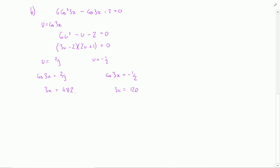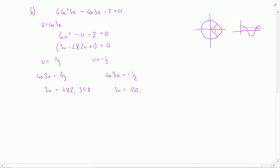With trigonometry we always get multiple solutions. Using a unit circle or a cosine curve: for 48.2°, the other solution is 360° − 48.2° = 311.8°. For 120°, the other solution comes from going back 120°, giving 240°. So our four values for 3x are 48.2°, 311.8°, 120°, and 240°.